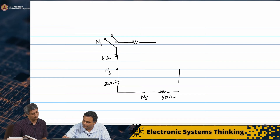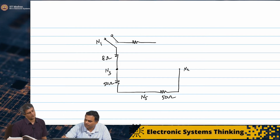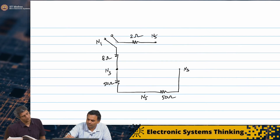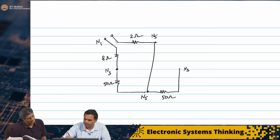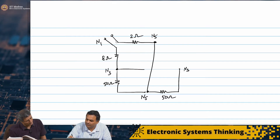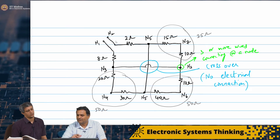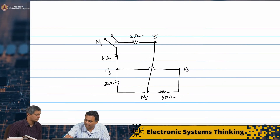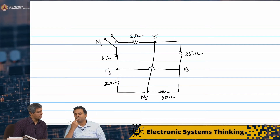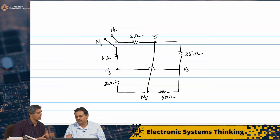N3 to N3 — crossover. And 25 ohms from N3 to N5. Effectively, N2 is there. How many nodes do we have now? N1, N2, N3, N5 — only 4 nodes. We had 7, and we have lost N4, N6, and N7.